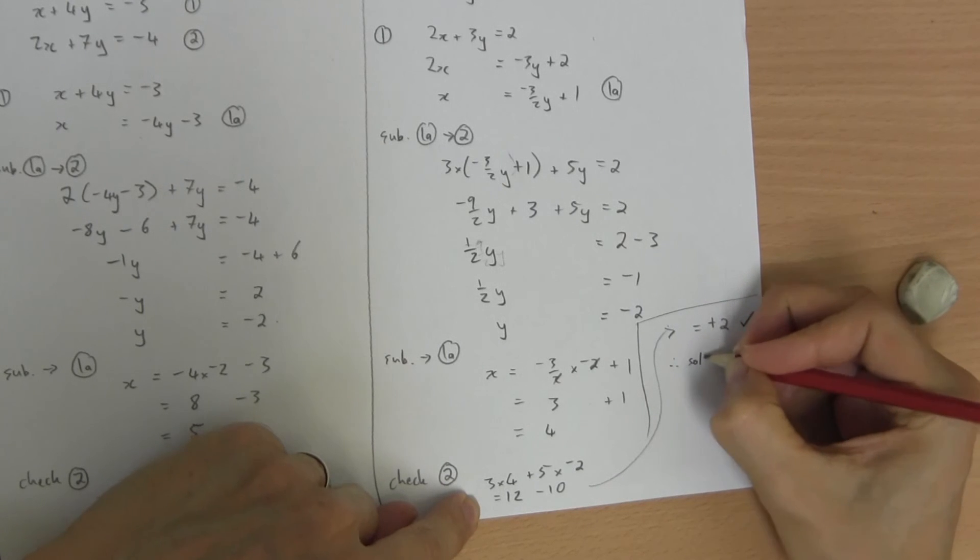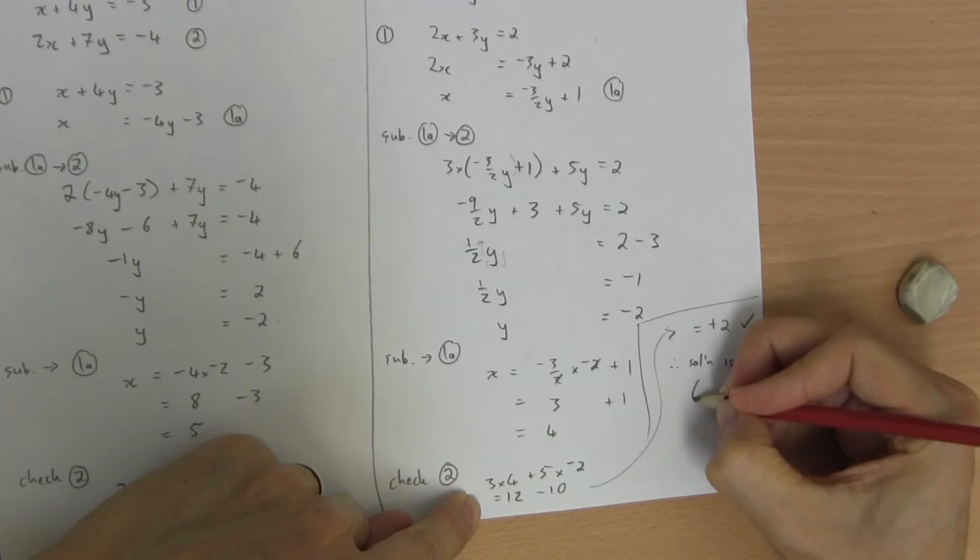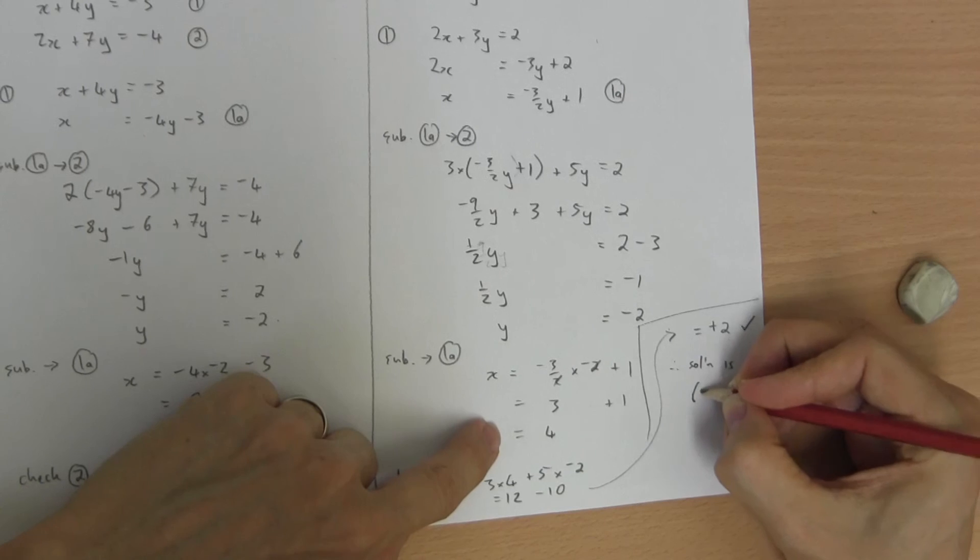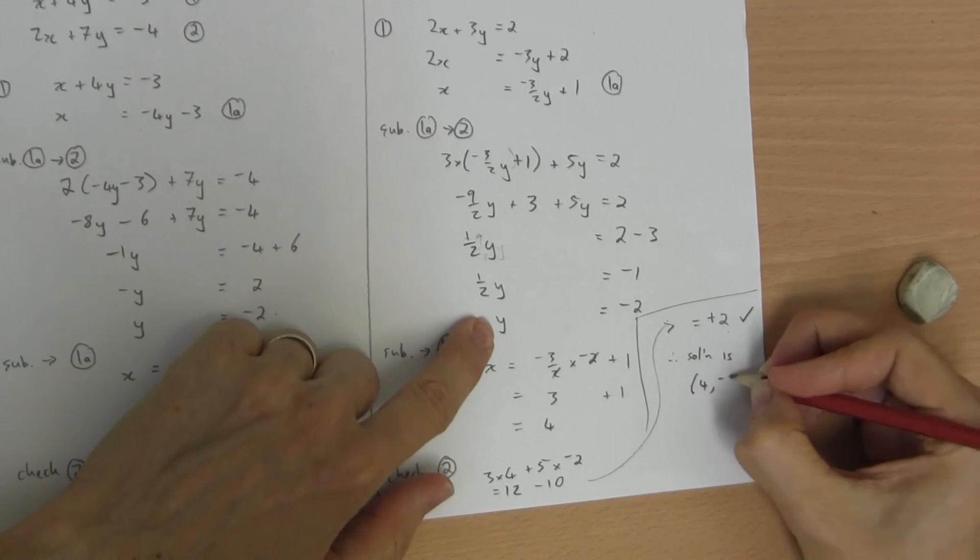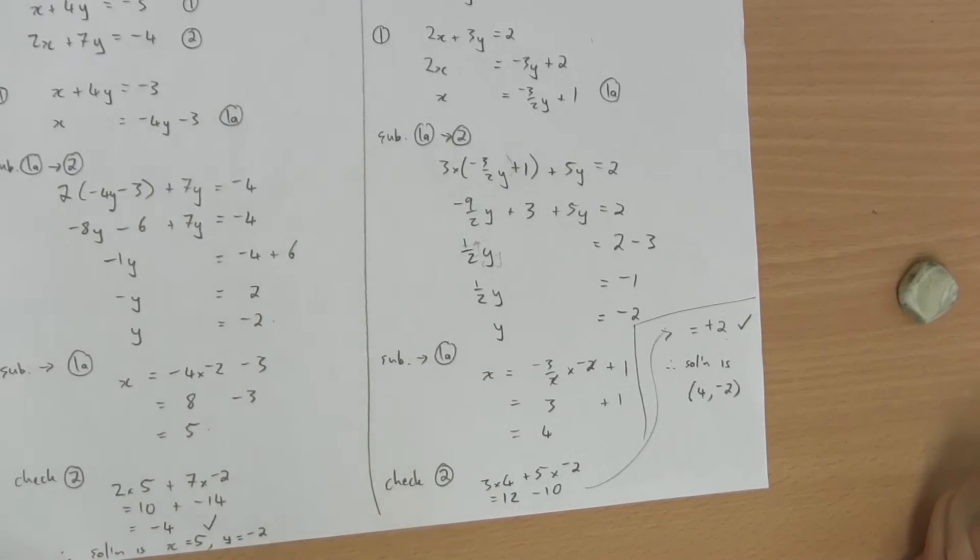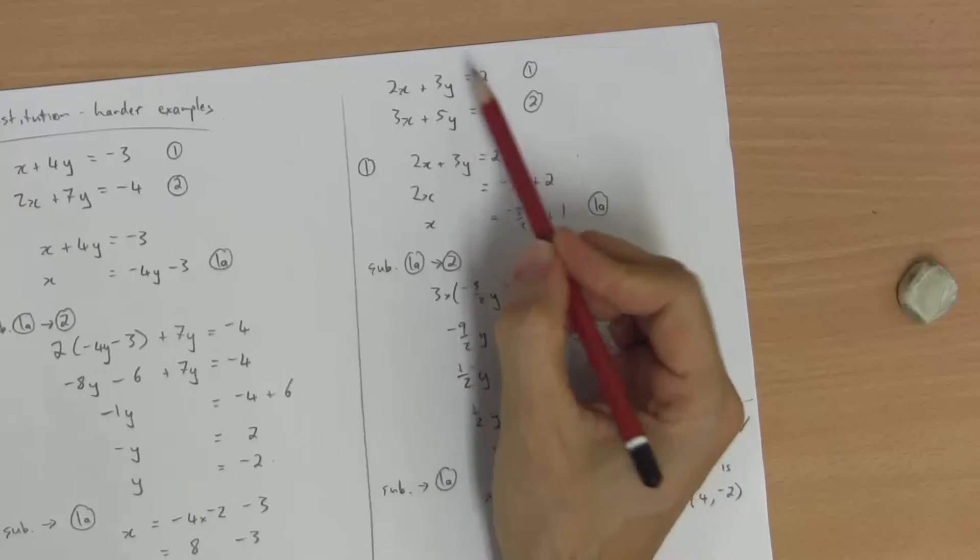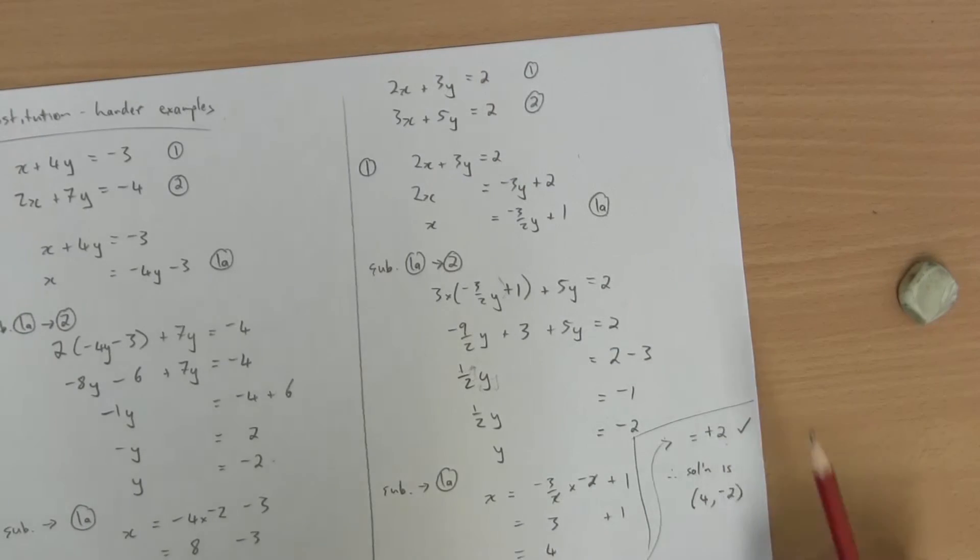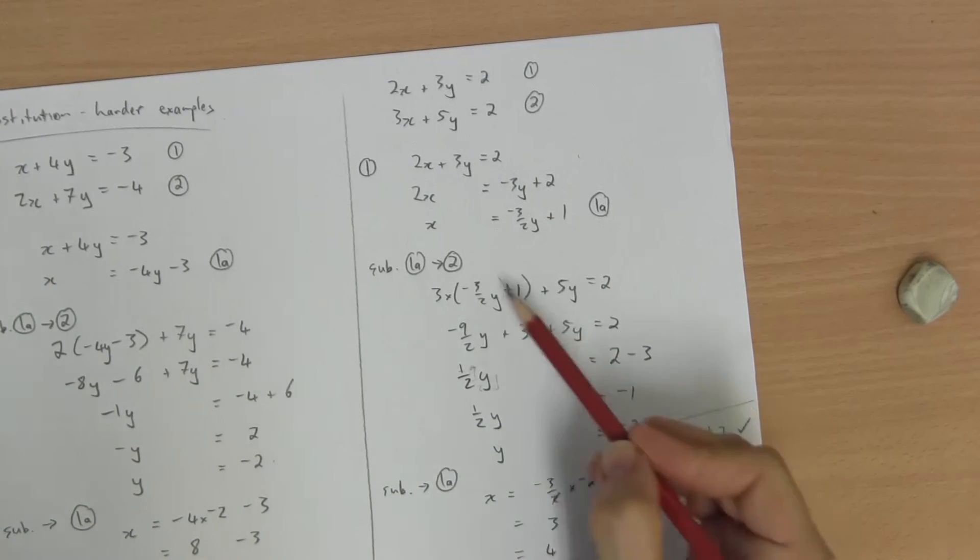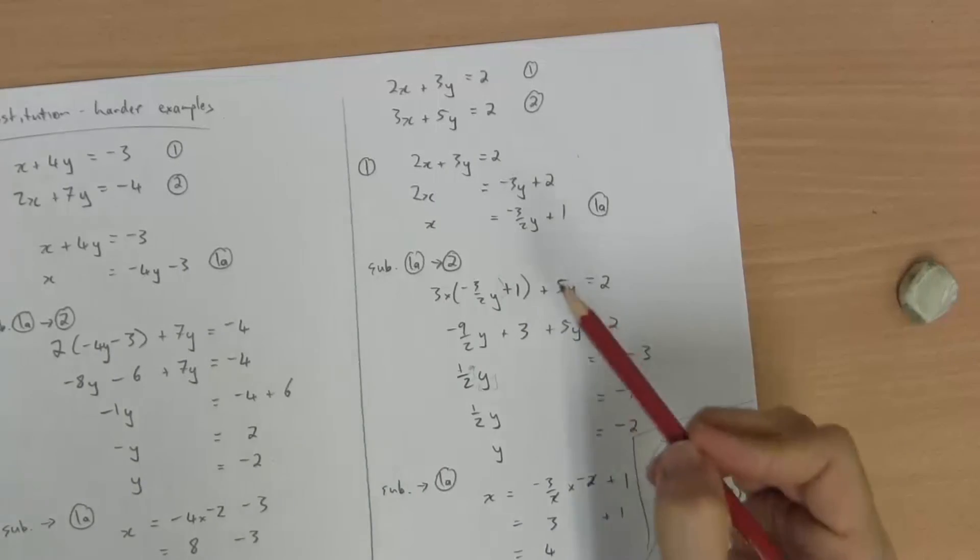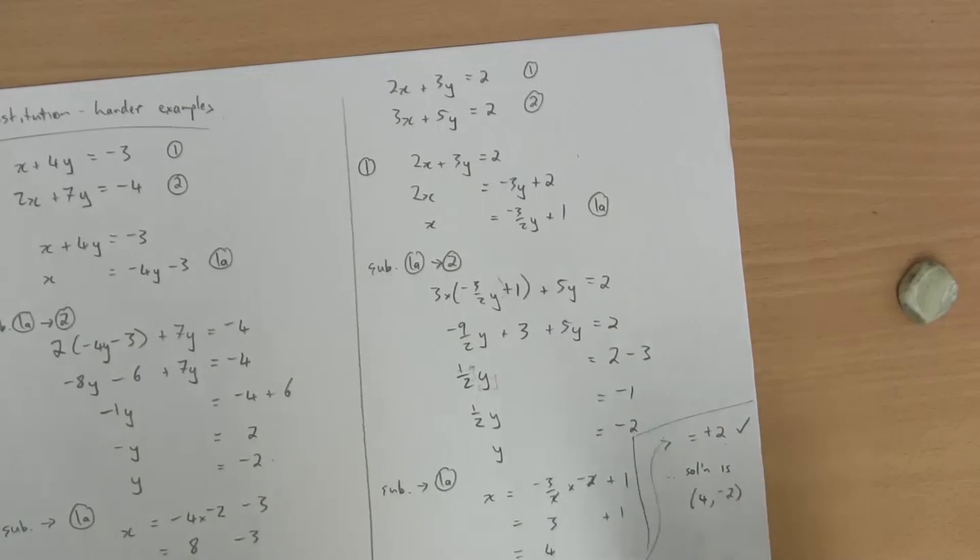Therefore, the solution is, in running out of rooms, I'm going to write the short way, x is 4, y is negative 2. It really is worth your while going back and trying to solve these with elimination. It will still be some effort, but it should avoid the fractions. Try it with elimination. You decide which one you prefer.